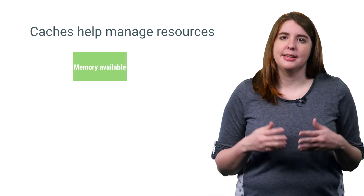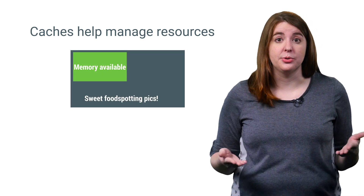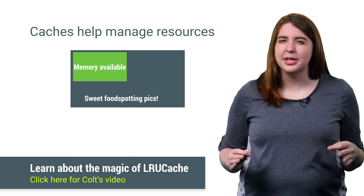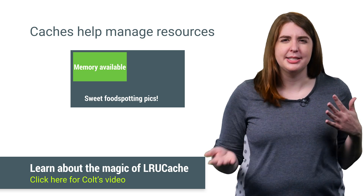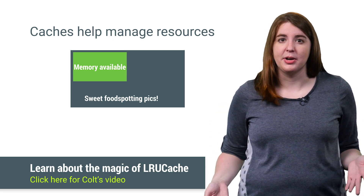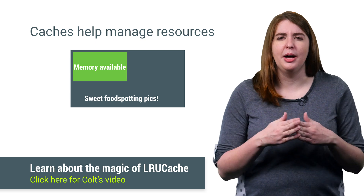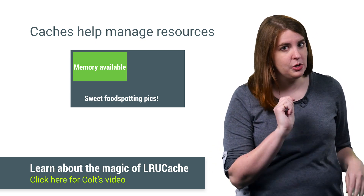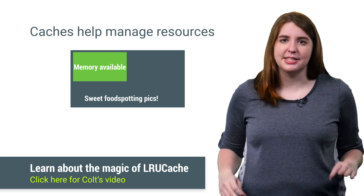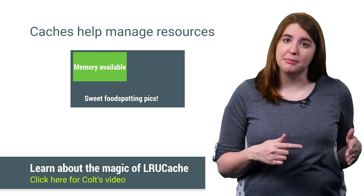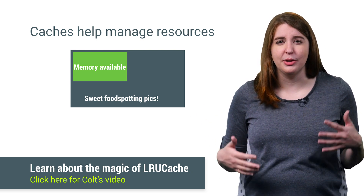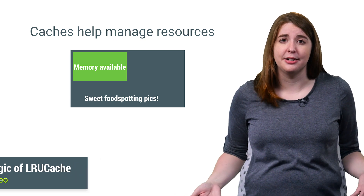Caching also acts as a fantastic resource for limited resource environments. For example, let's say that you have about 2 gigabytes of images that the user might need to display, but you can only fit 50 megabytes of them in memory at a time. The Android framework will help you out as much as it can if you use an adapter view, but you can make this more effective by keeping track of what images to keep in memory and which to evict, so that the framework doesn't need to evaluate the full 2 gigabytes of content.